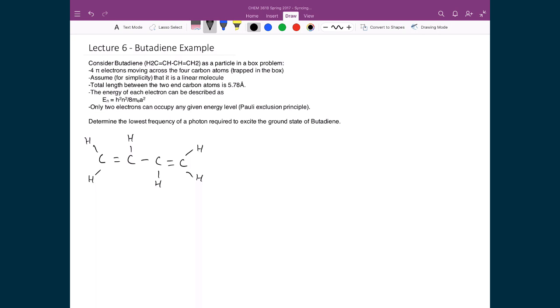And so we're going to make a couple of assumptions. The first one is that we have four pi electrons that are moving across the four carbon atoms, which means that this is the box that these four electrons are trapped in, and that box basically has a length of about 5.78 angstroms, where one angstrom is equal to 10 to the minus 10 meters.